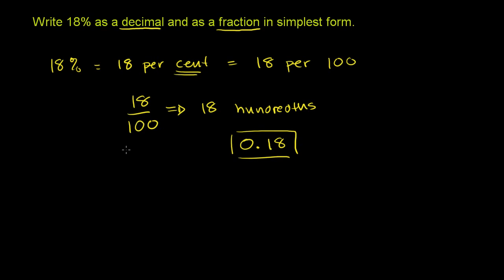So let's divide both the numerator and the denominator by 2. So we have 18 divided by 2 over 100 divided by 2. And we're going to get 18 divided by 2 is 9.